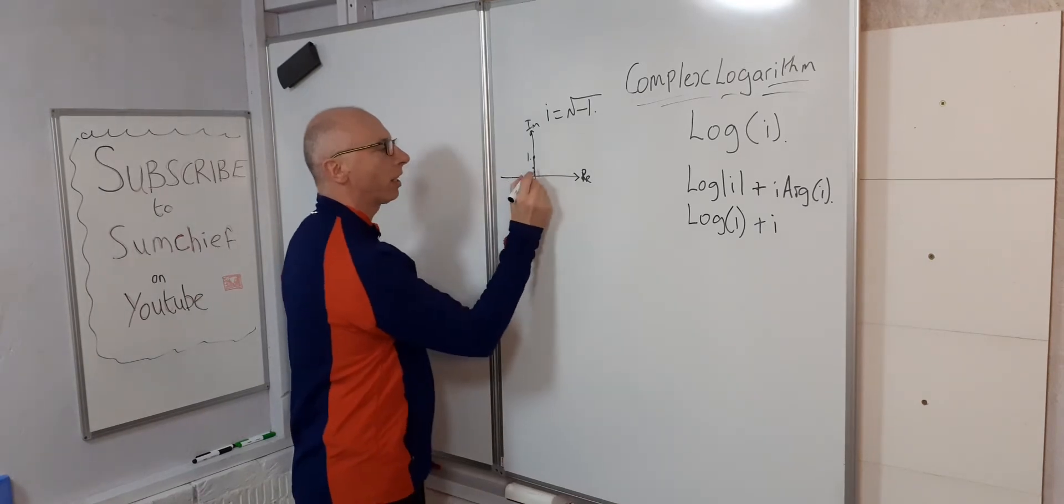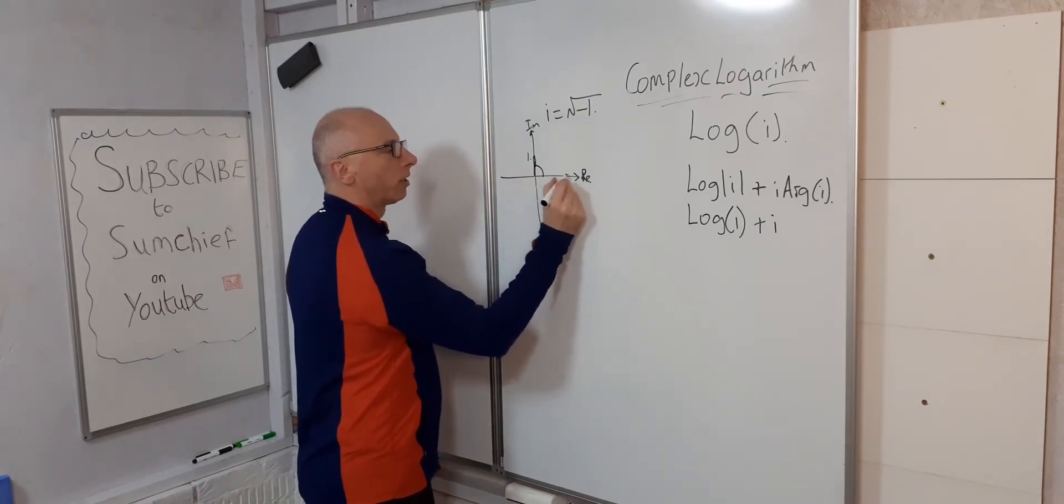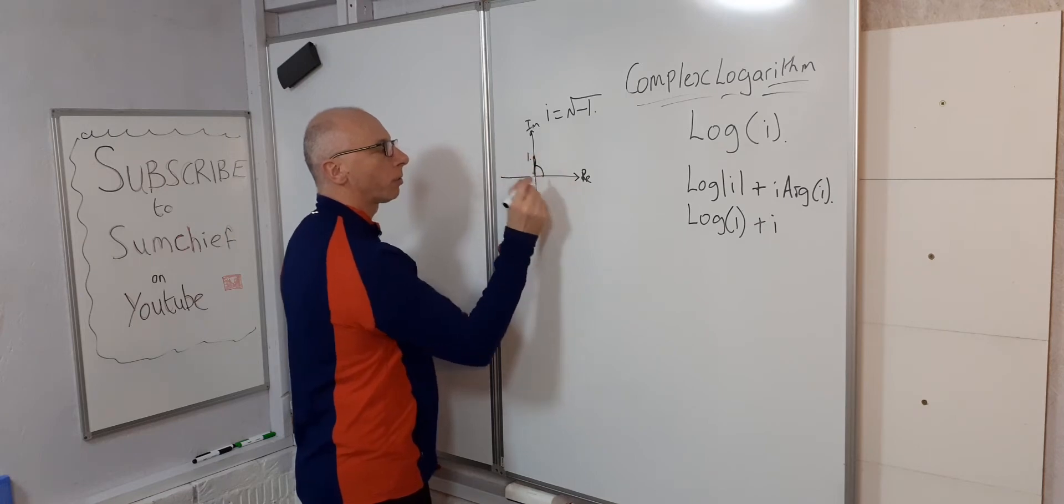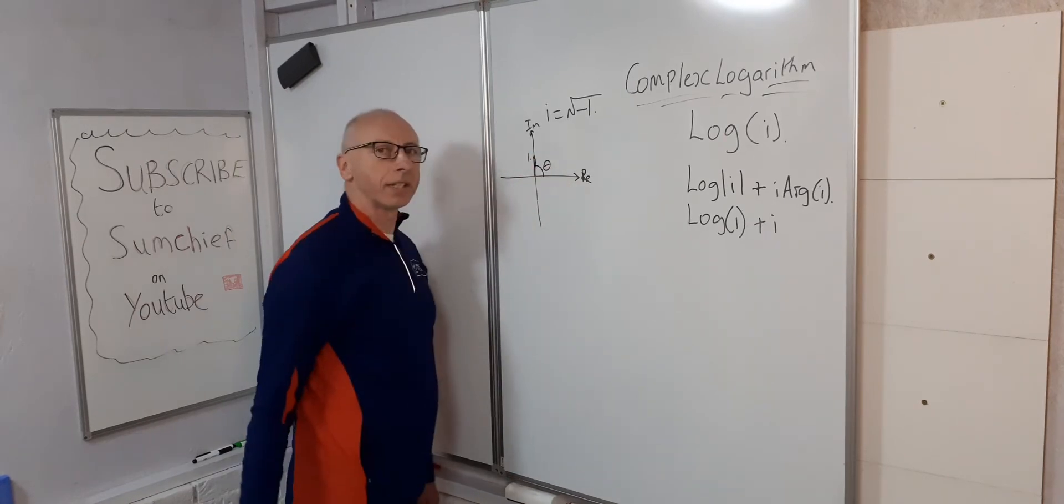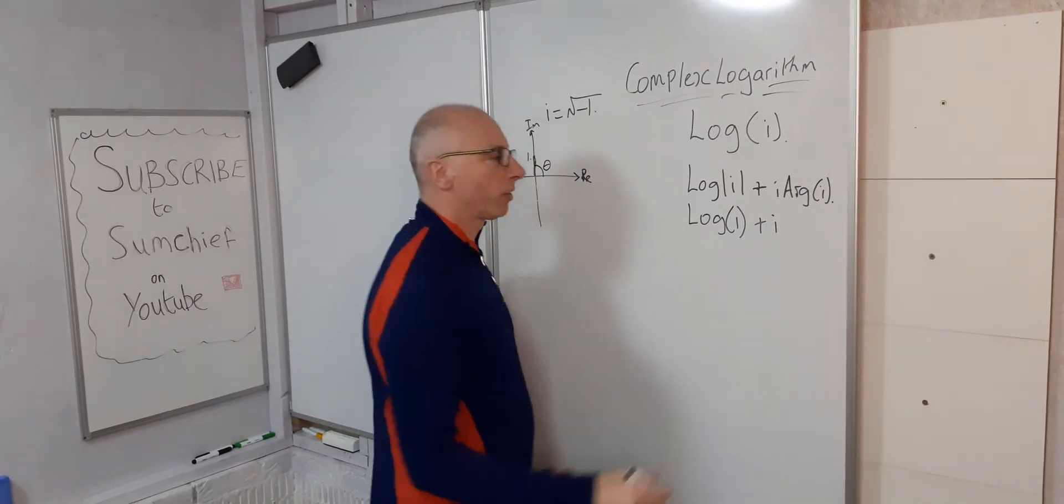So to do the argument of i, we just need this angle from the real axis to where i is. We're going to call this angle theta. And as this is a right angle, we know that the angle is pi over 2.